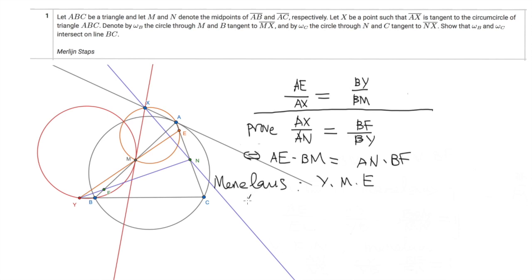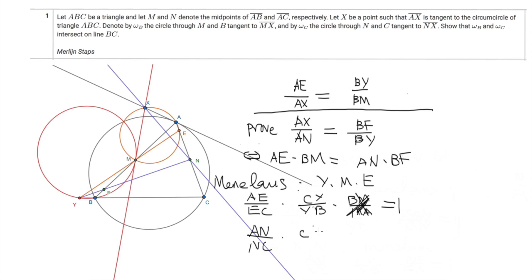Applying Menelaus on line YME with respect to triangle ABC, we get: AE over EC times CY over YB times BM over MA equals 1. Since M is the midpoint, BM equals MA, so those cancel, giving AE over EC equals BY over CY. Next, applying Menelaus on line NFY with respect to triangle ABC, we get: AN over NC times CY over YB times BF over FA equals 1. Since N is the midpoint, AN equals NC, which gives us BF over FA equals CY over BY. Combining these two results, AE over EC equals BF over FA.